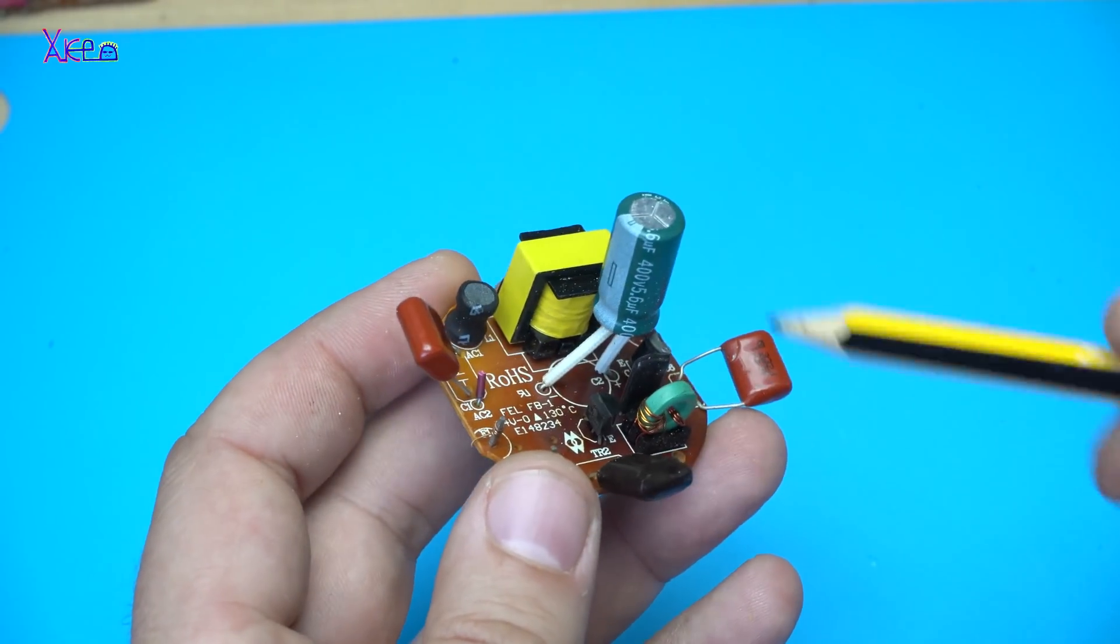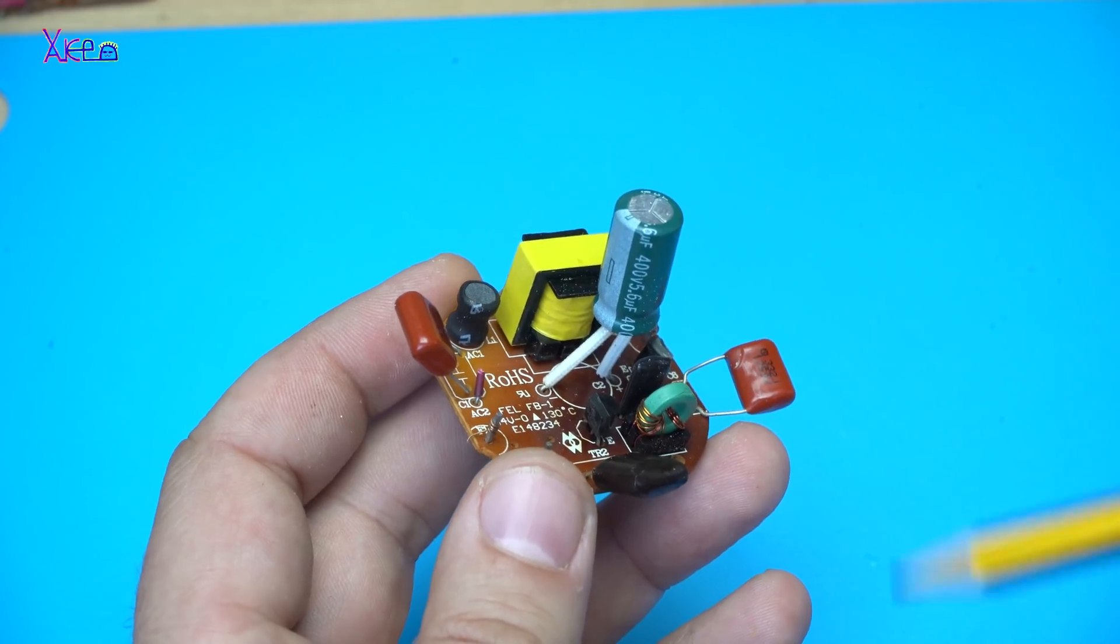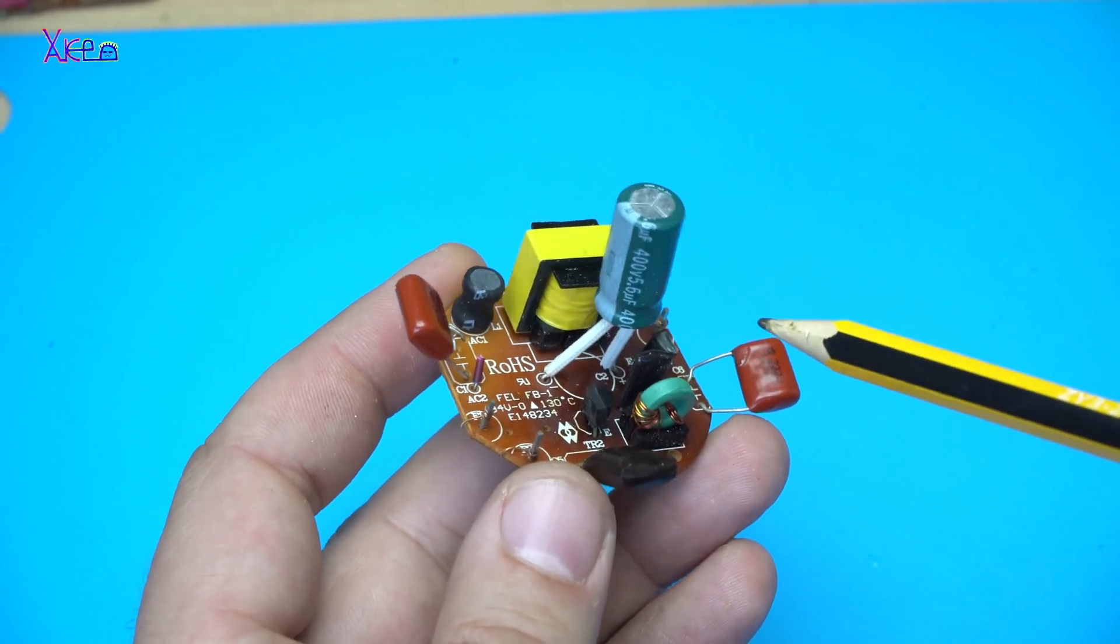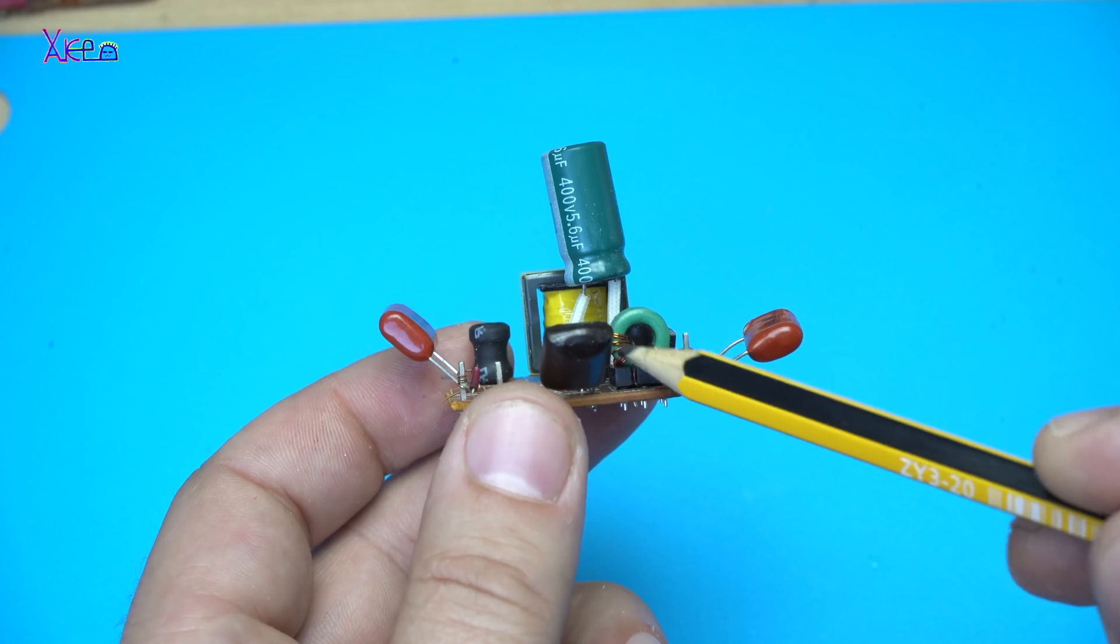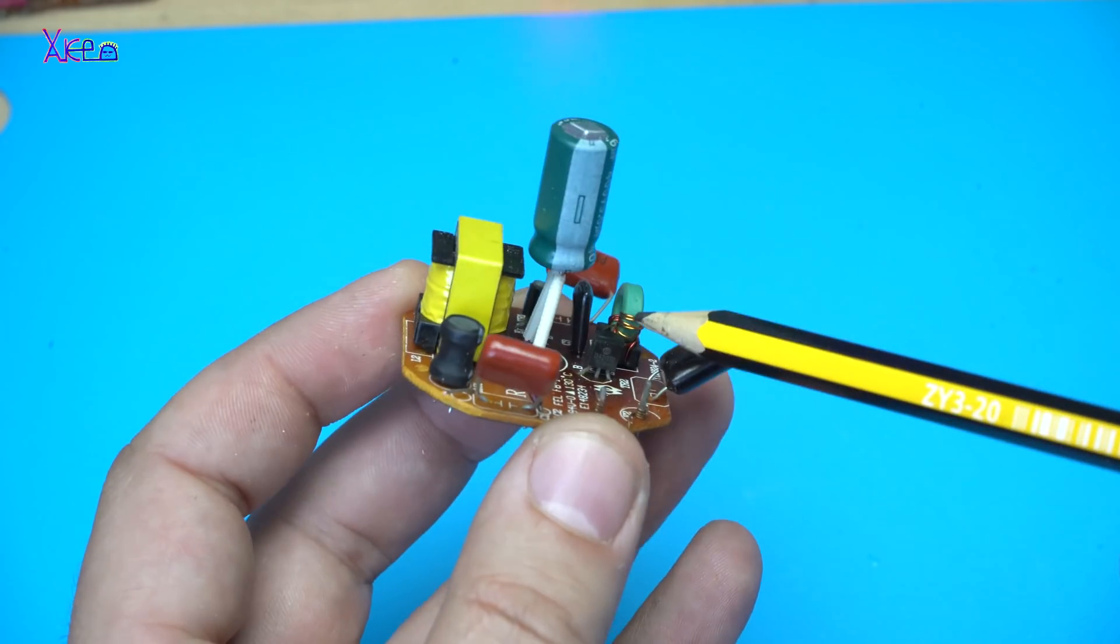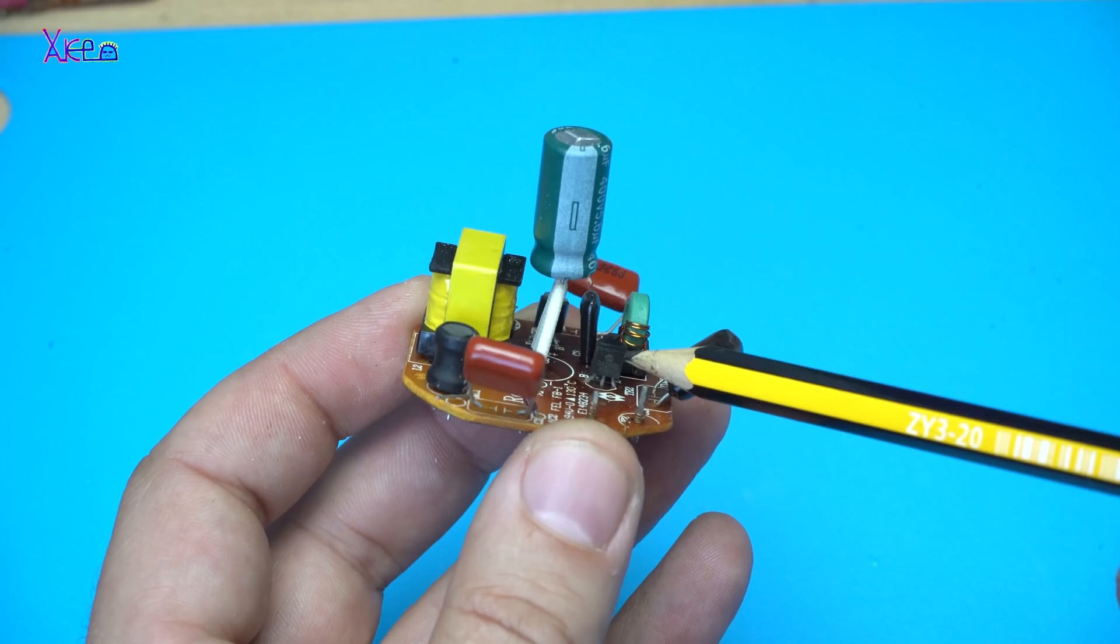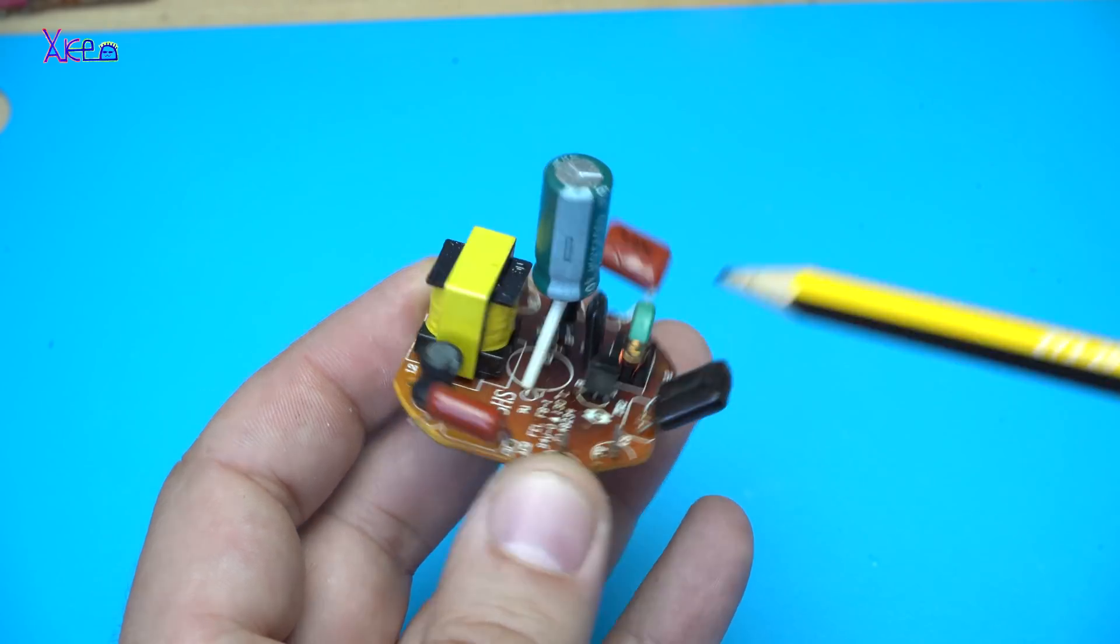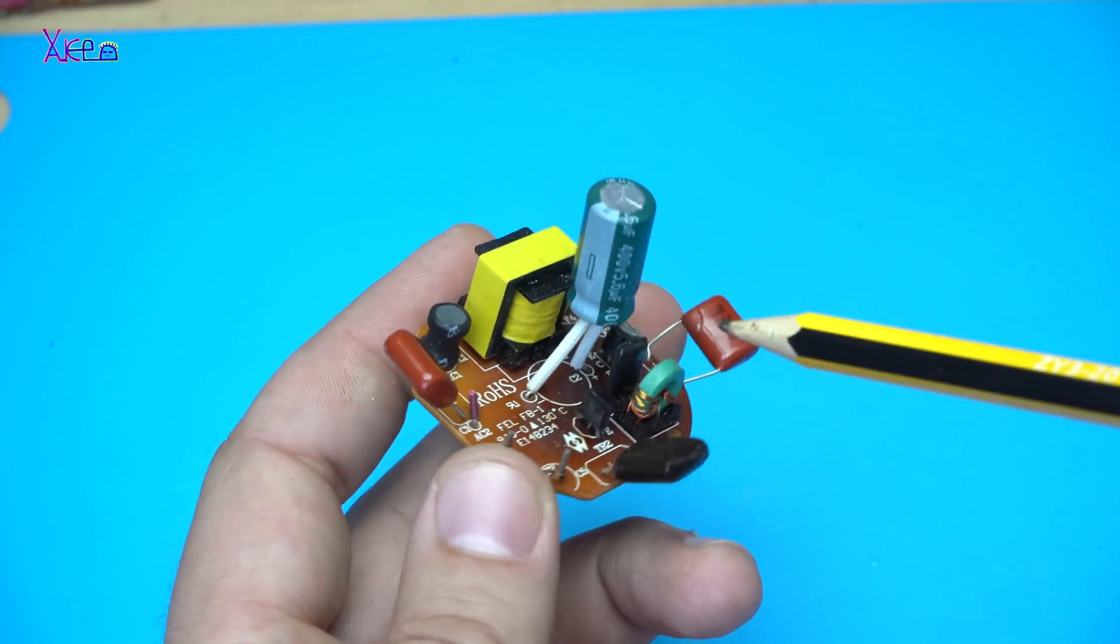There are a bunch of electronic components. But for this project, I need this ferrite core. And this NPN transistor. Let's desolder.